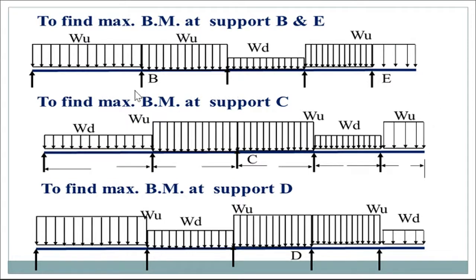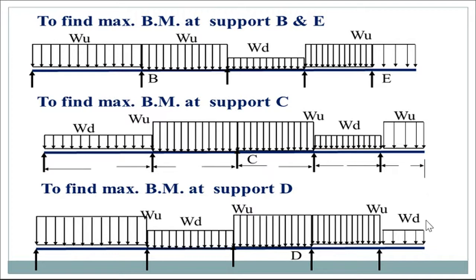For the third combination, to find out the support moment: since A is a simple support, there is no need to find the support moment at A — it is already zero. When we find the bending moment at continuous support B, we provide maximum load on the adjacent spans and minimum load on the next spans. Using this combination, we get the maximum moment at support B and support E. Similarly, to find the maximum design moment for support C, we provide maximum load on adjacent spans and minimum load next to adjacent spans, giving negative bending moment at C, and similarly for D.